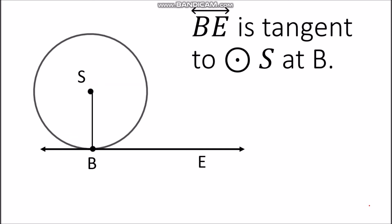Let's say we have circle S, wherein line BE is tangent to circle S at point B. Now if we draw the radius, which is segment SP, then from Theorem 101, segment SP is perpendicular to the tangent. If they are perpendicular, that means they will form a right angle.